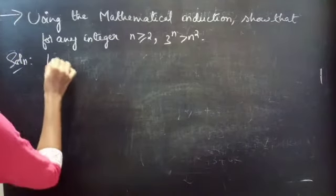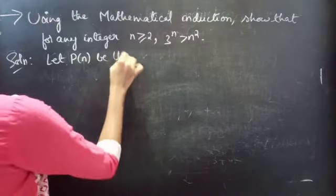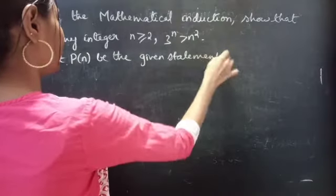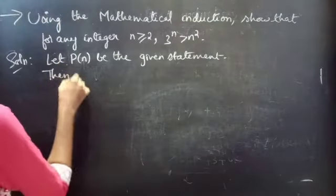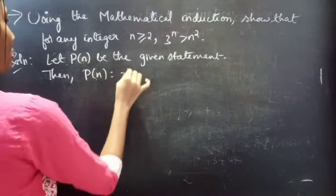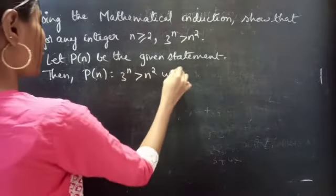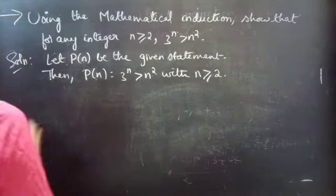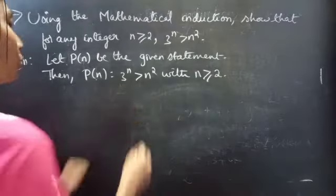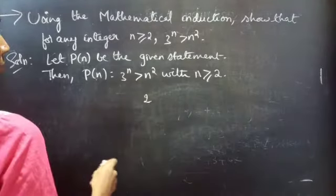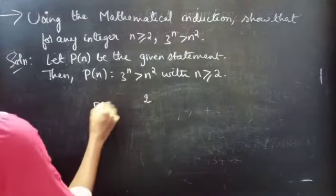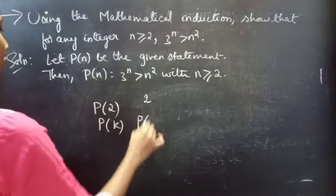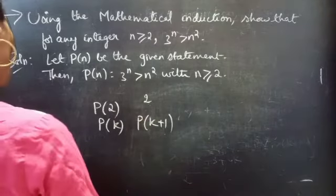Let P(n) be the given statement. Then P(n) states that 3^n is greater than n², for n greater than or equal to 2. Since we are given n ≥ 2, firstly we will check for n = 2. Then we will assume the statement is true for n = k, and finally we will show that the statement is true for n = k + 1.